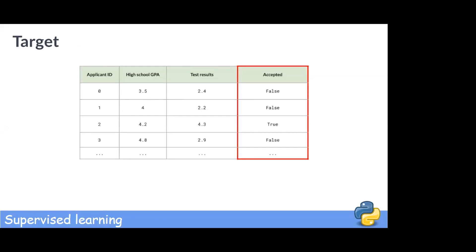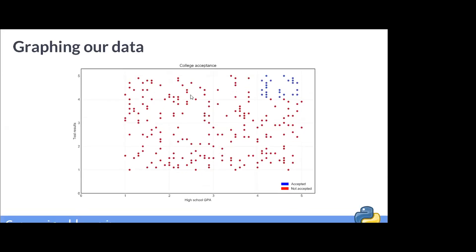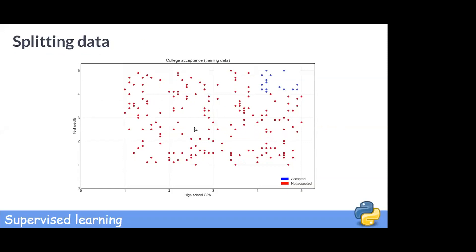The target can only be one of these two labels, making it a classification problem. Our observations are plotted with GPA on the x-axis and test results on the y-axis. The blue points represent accepted applicants and the red points represent rejected applicants. We keep 80 percent of our data to train our model. Because we use just two features, we are able to plot and interpret the results.